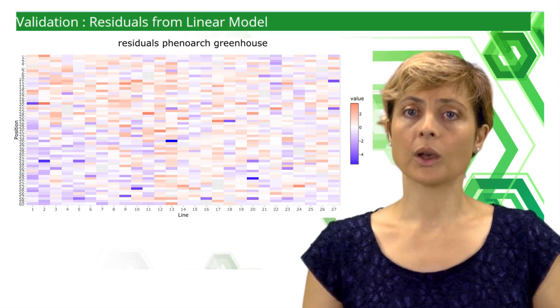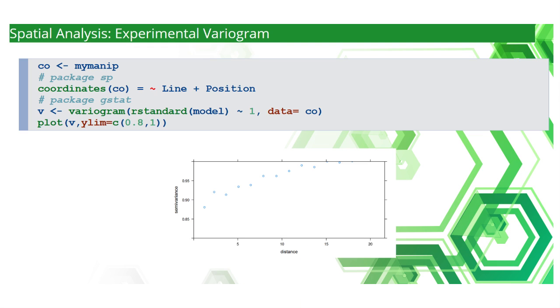My command on R. The aim of the first line is to create a copy of the current data frame, mymanip, under the name CO. From package SP, for spatial patterns, the command coordinates specifies which variables are used to define the coordinates of the plants. From package GSTAT, the command variogram computes the experimental variogram of the standardized residuals from the linear model. In the last line, the command plot draws the experimental variogram to visually check the existence of a spatial structure.